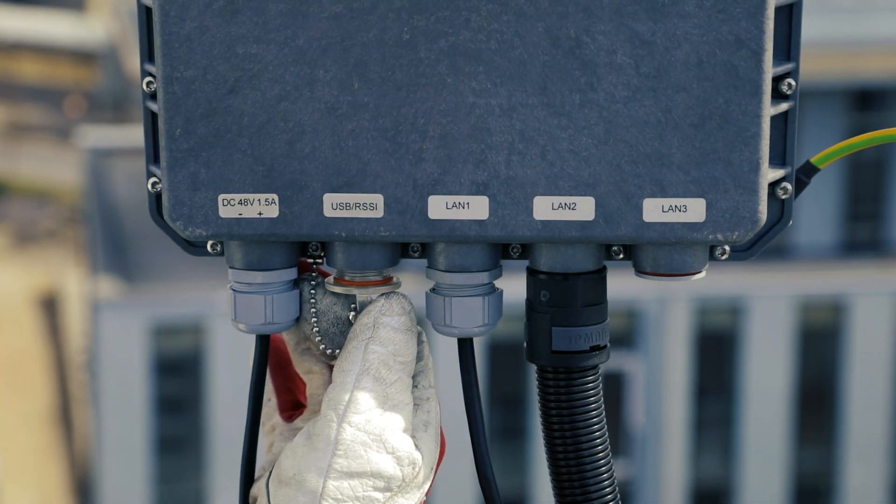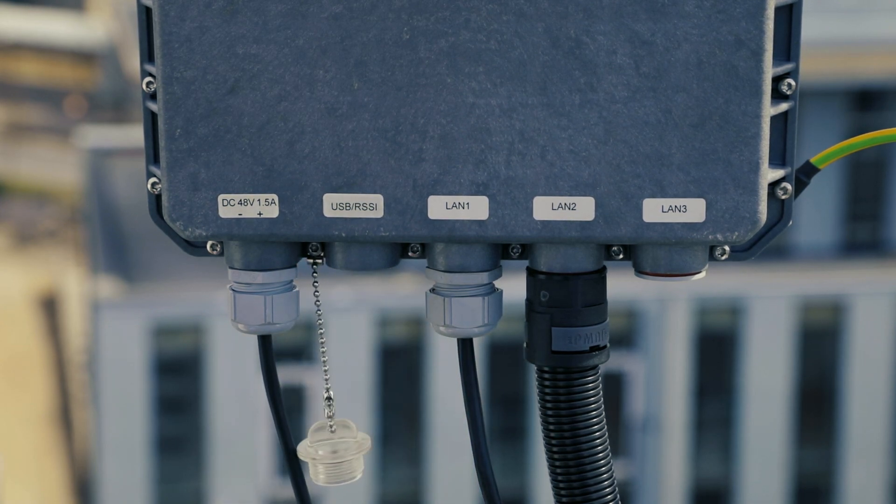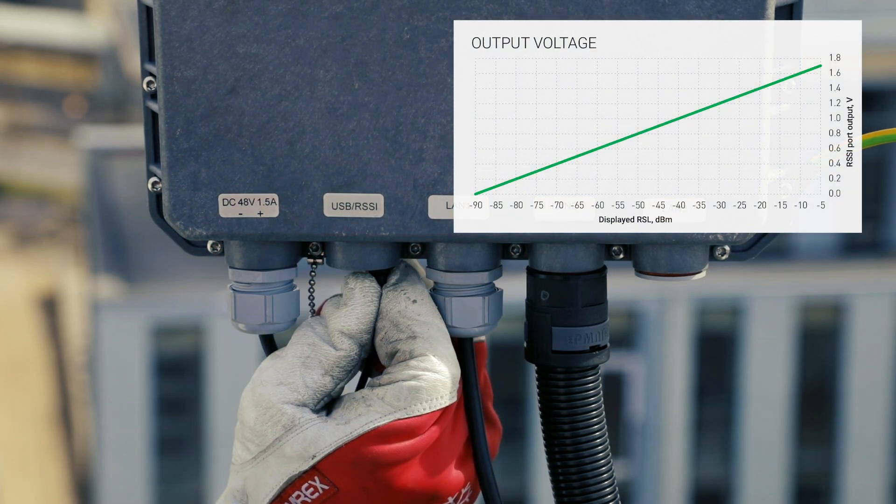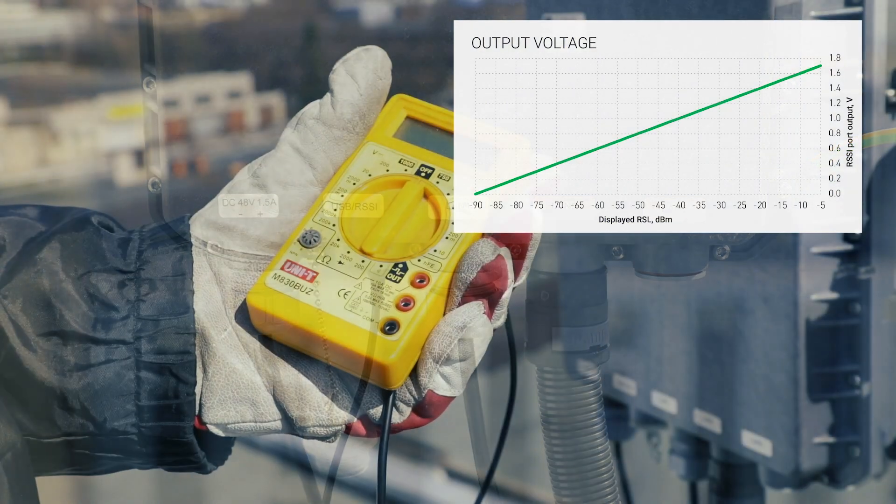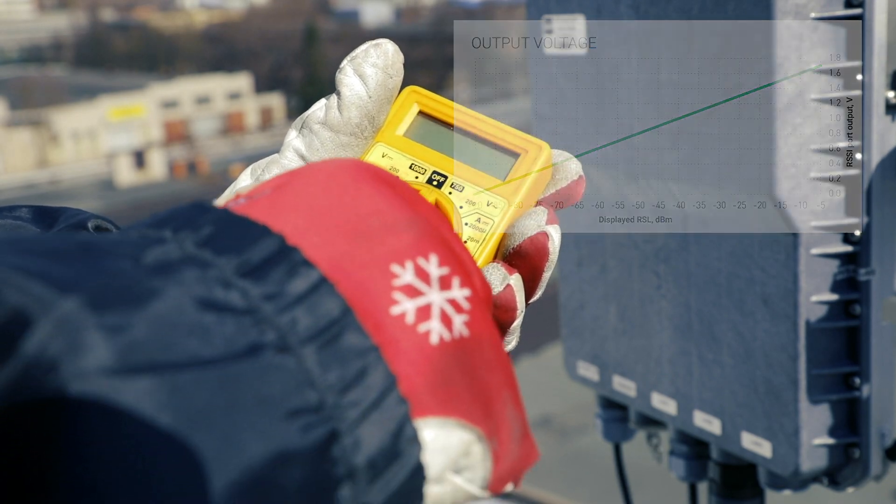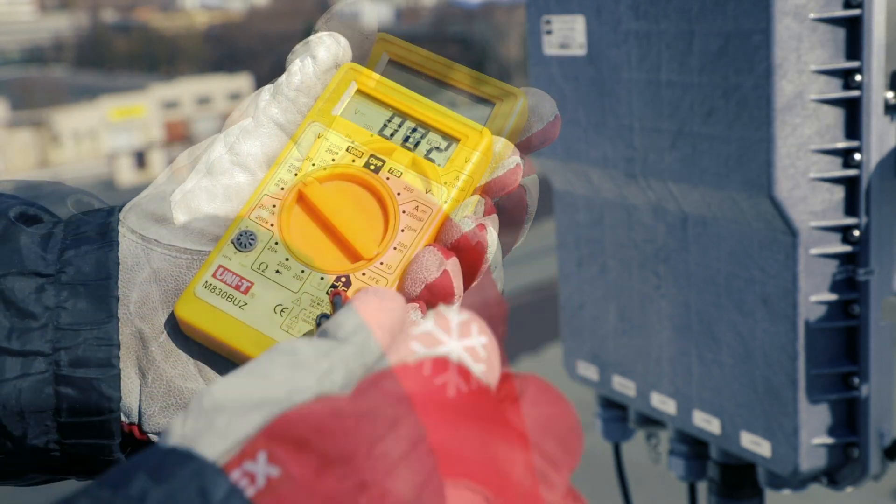To perform fine alignment, connect a voltmeter to the RSSI port. The voltage value corresponds to the received signal level and varies from 0 volts for negative 90 dBm up to 1.7 volts for negative 5 dBm. Switch the voltmeter to DC mode.